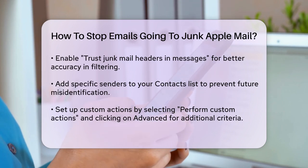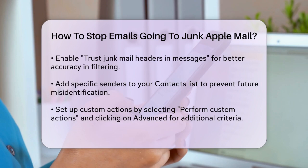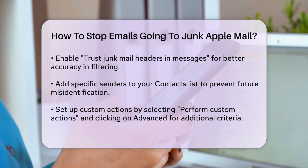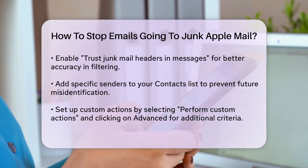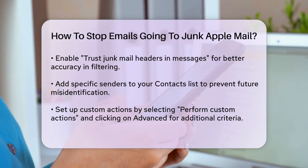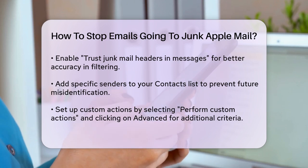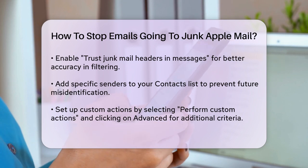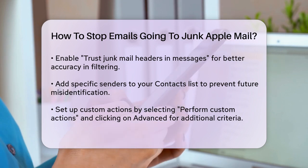If you find that certain emails are still being misidentified, you can add specific senders to your contacts list. To do this, open an email from the sender, click on their name, and select 'Add to Contacts.' This ensures that future emails from them won't be marked as junk.